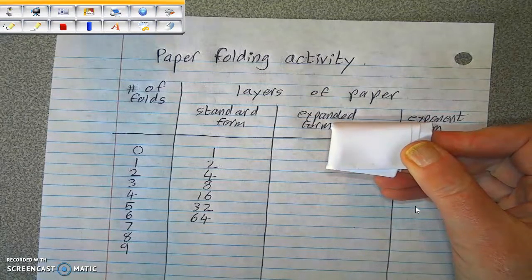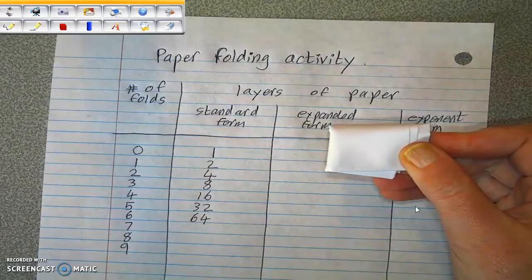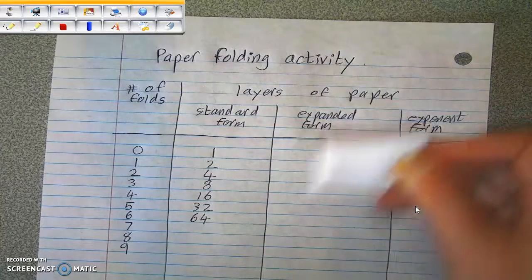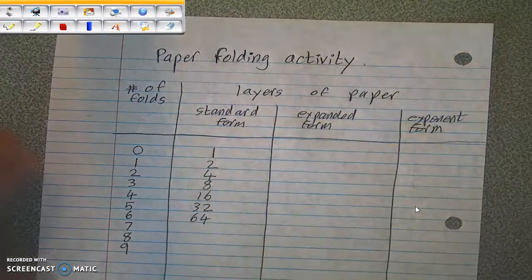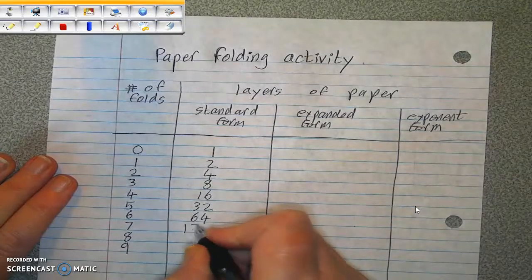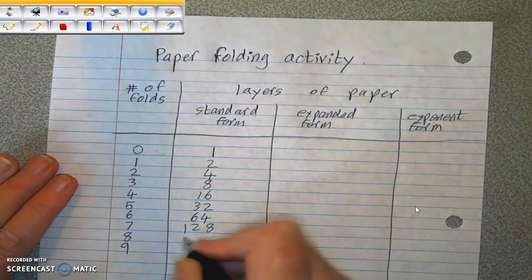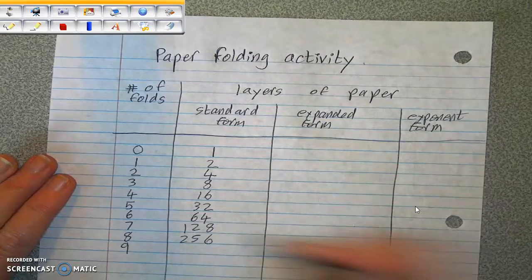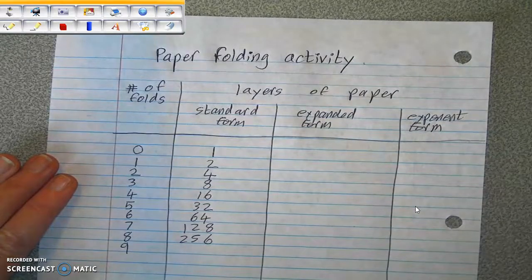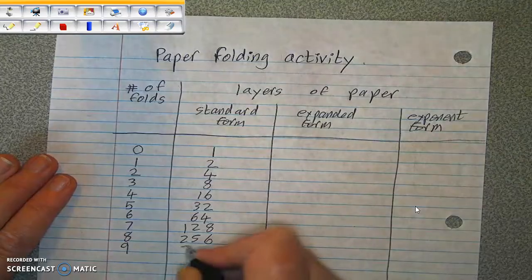You may have been able to go further. If we could go further, the numbers would be 128 layers, 256 layers, and 512 layers.